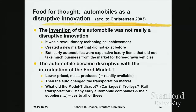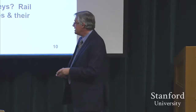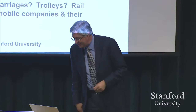What did the Model T disrupt? Horse-drawn carriages, of course. Also streetcars, which used to be all over the place — they dropped like a rock. Rail transportation in general — some people argue the reason rail transportation in the US has gone down is because of the interstate highway system, which is the disruptive innovation. It also disrupted most of the early automobile companies; there were dozens of them that failed because Ford took over the market. So yes, it was disruptive in a number of different ways.